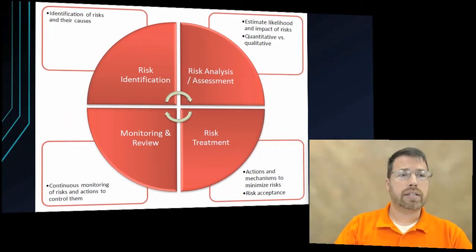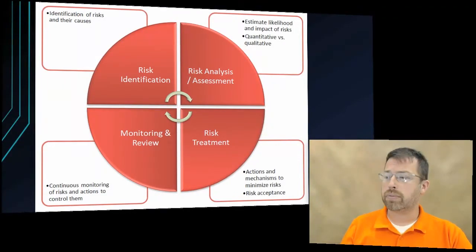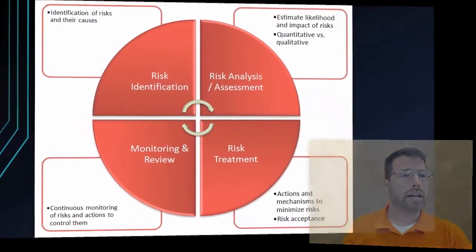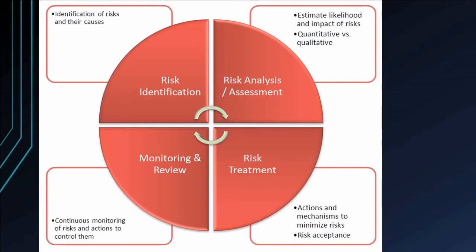Here we can see a different chart explaining what we can do to help with this. Risk identification: what are the risks? Flood, fire, hurricane, things along those lines. Risk analysis: what can we do, and what's the likelihood? What are the chances of being hit by a hurricane living in North Louisiana? What are the chances of a fire hitting our facility? Risk treatment: actions we can take — we can accept different risks or put actions in place to help prevent them.